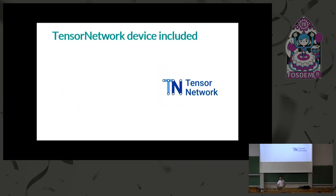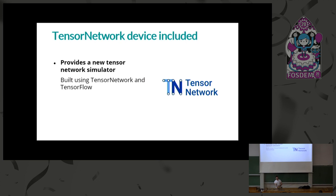We've also heard feedback that people want faster simulations. PennyLane took a hardware-first approach — a QNode should always be executable on hardware. But there are shortcuts with classical simulators. If we write the simulator using TensorFlow or PyTorch, we can use classical backpropagation techniques that scale better in certain regimes. PennyLane now includes a tensor network simulator built using Google's tensor network software and TensorFlow, using classical backpropagation inside the QNode. This enables routines where you train your quantum circuit on a simulator and then deploy using test data on the quantum device.